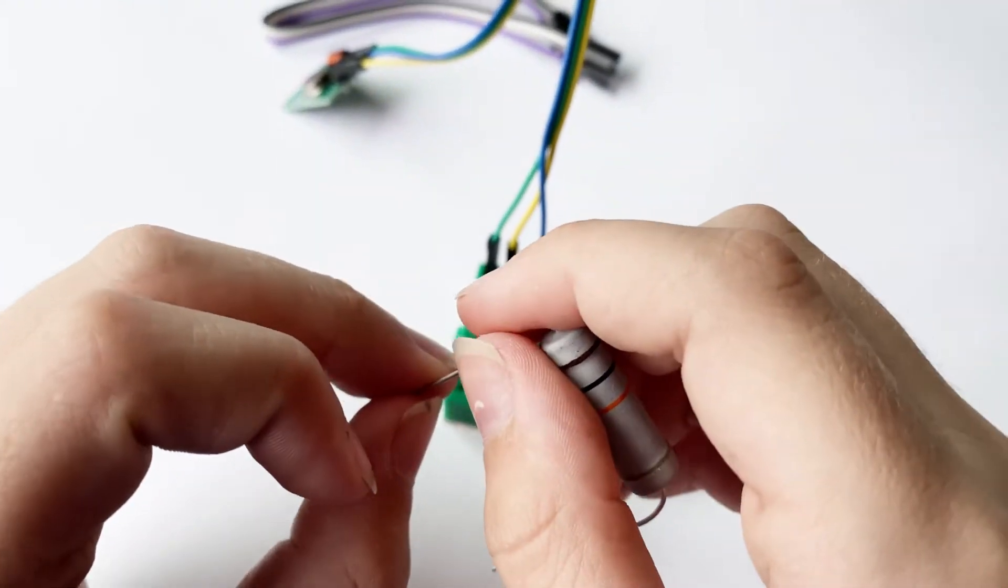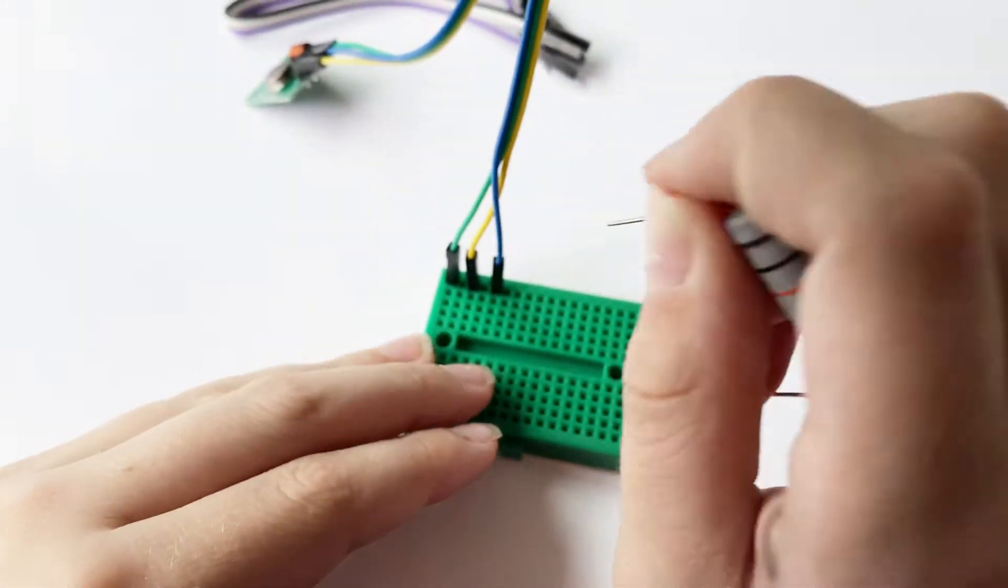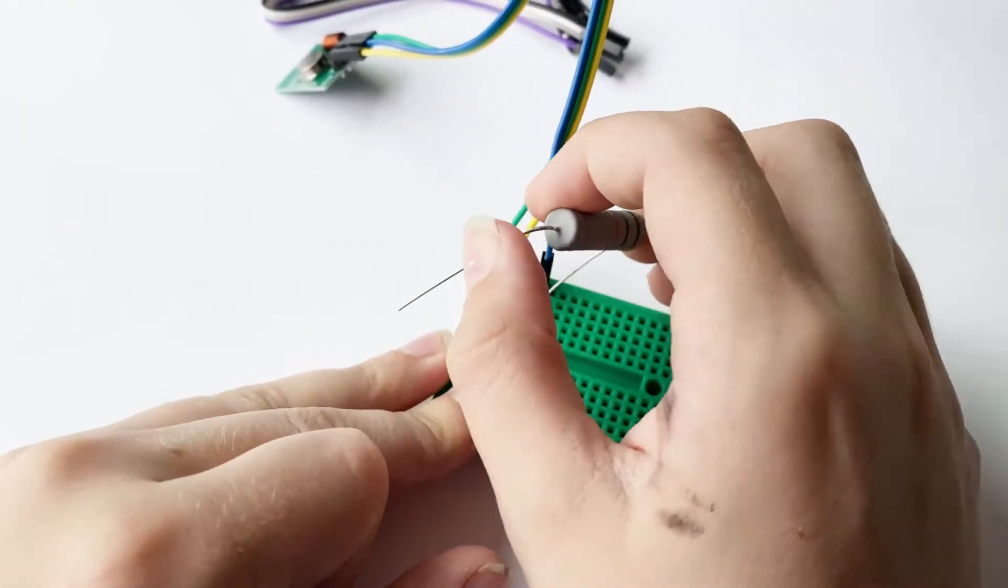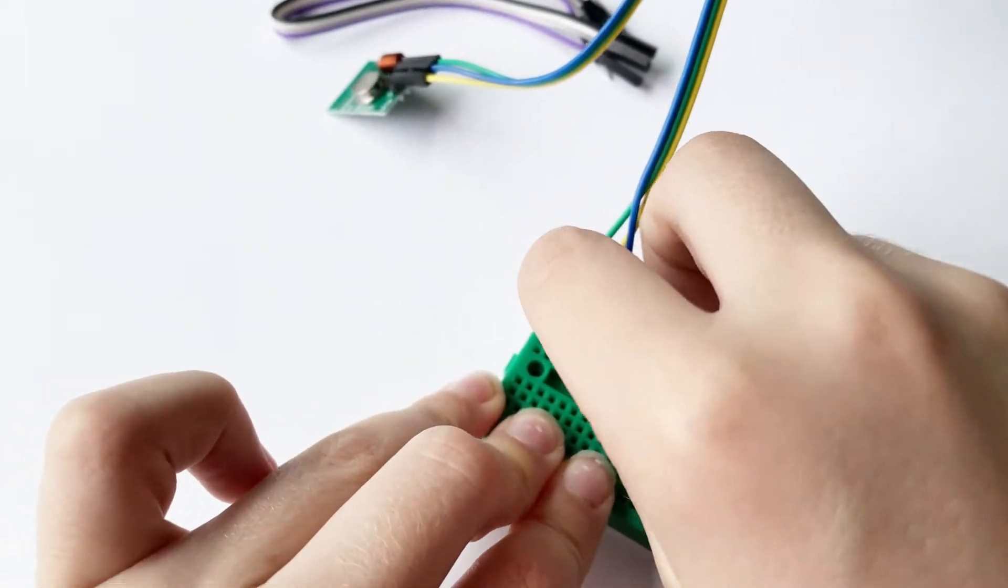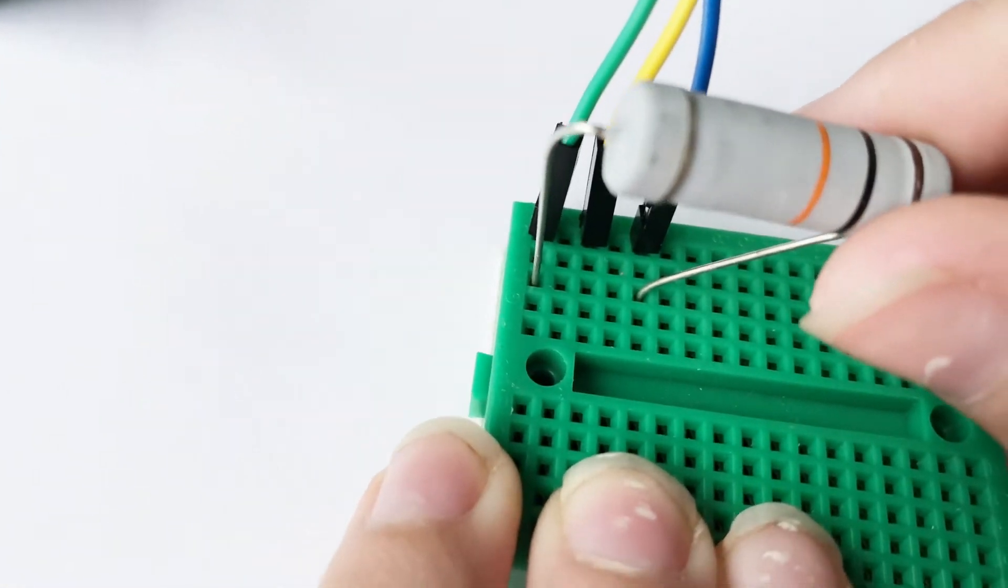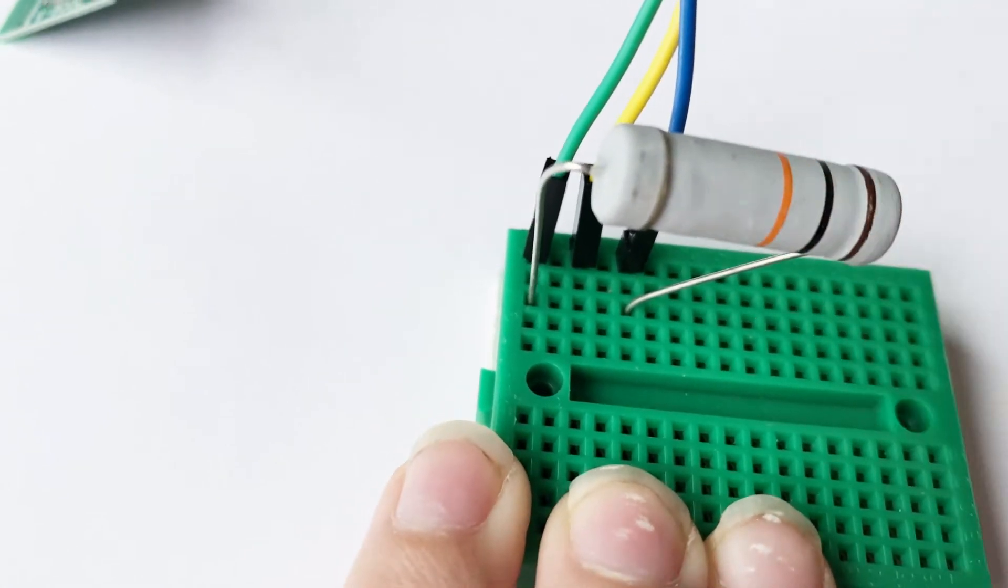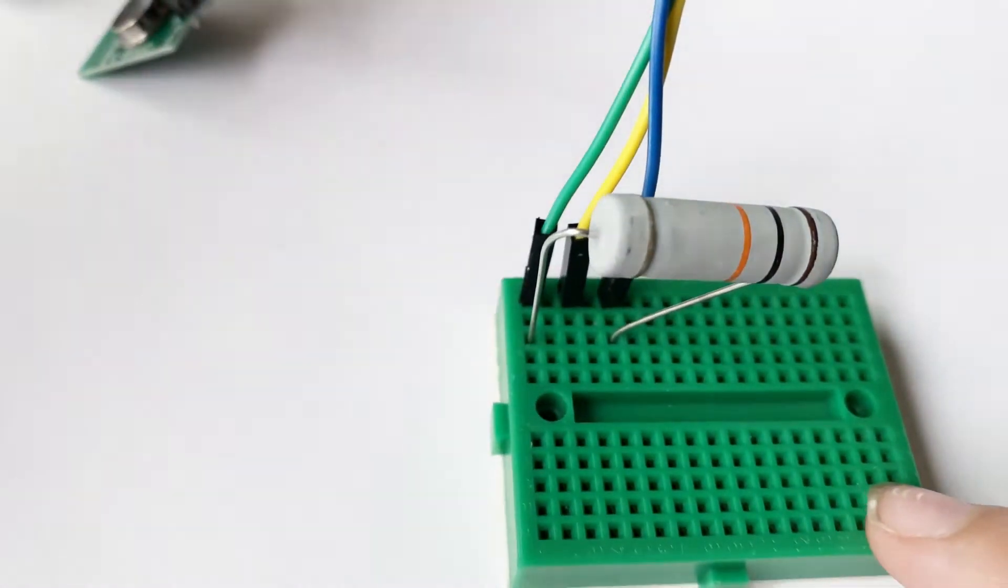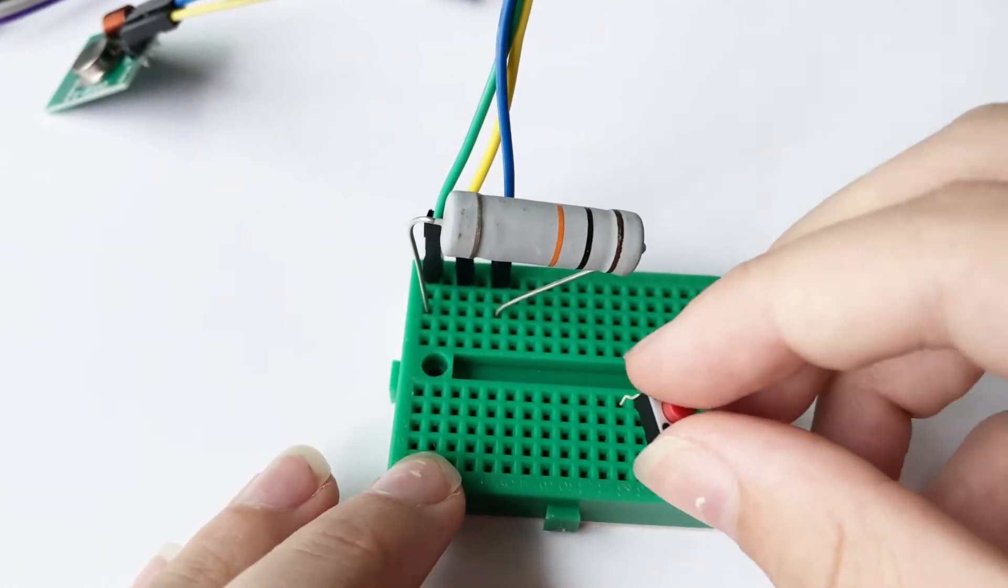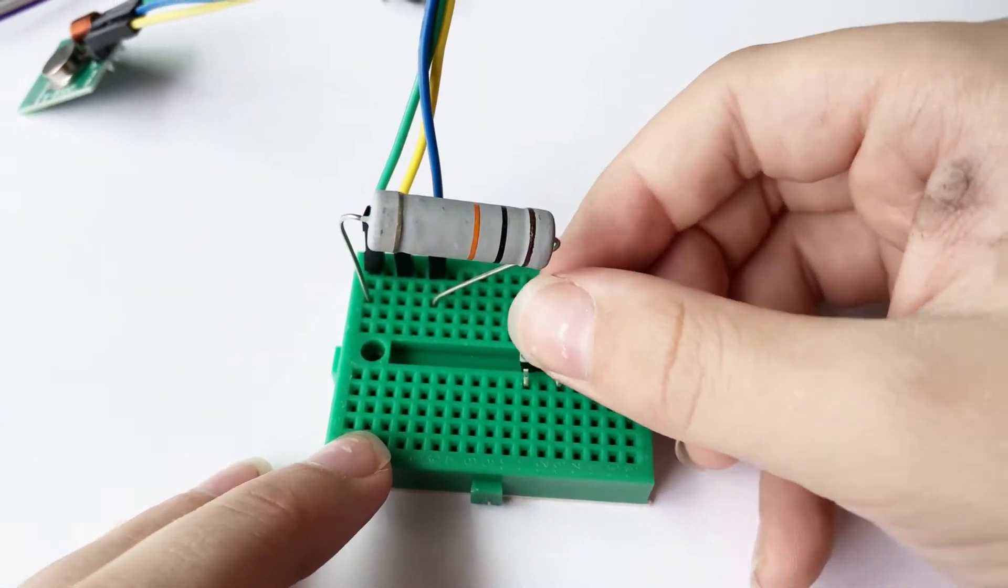Put it only by the blue wire there and then into the same row of holes as that green wire like that. Now we can get a button and put it there.